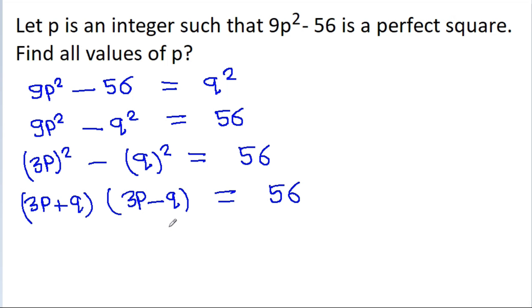Since p and q are integers, 3p plus q and 3p minus q will also be integers, and we have the product of these two integers equal to 56.